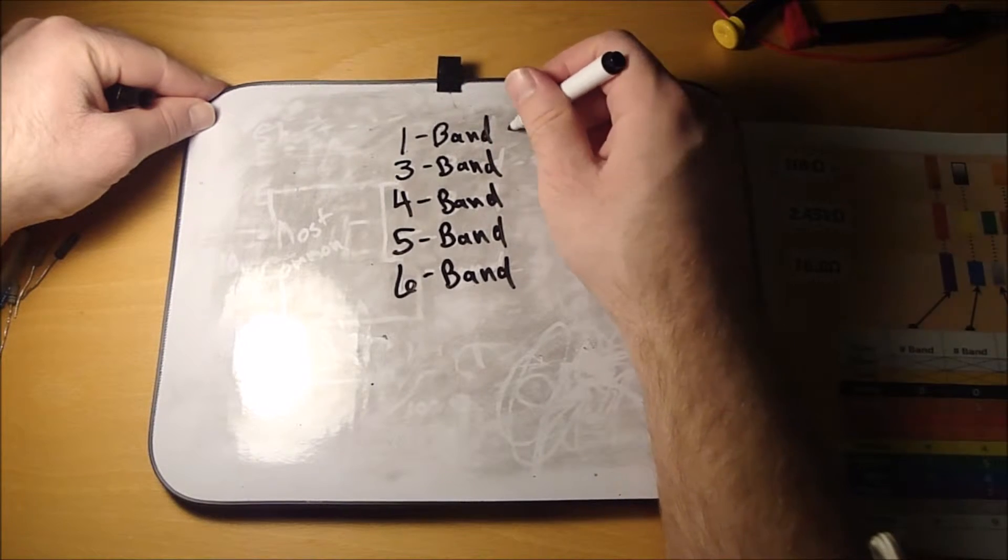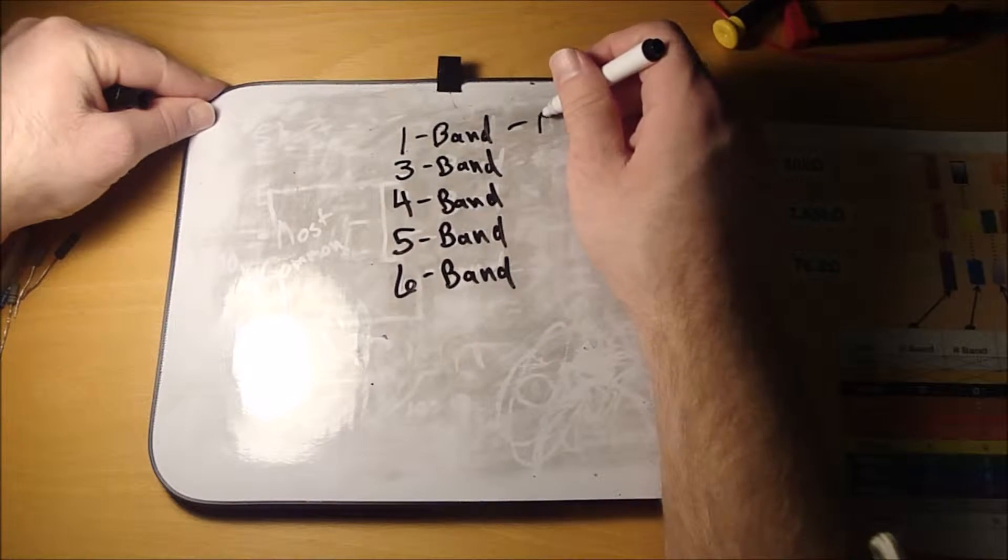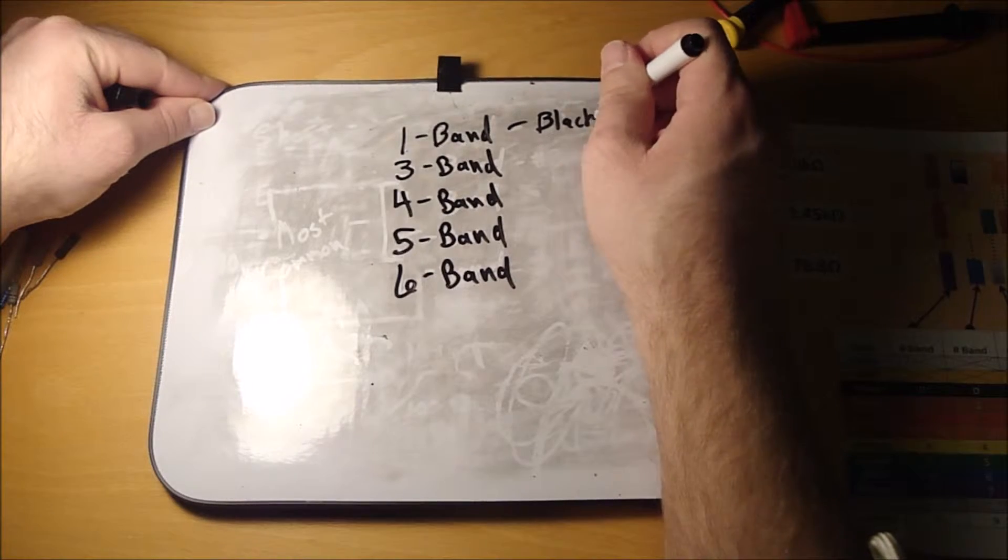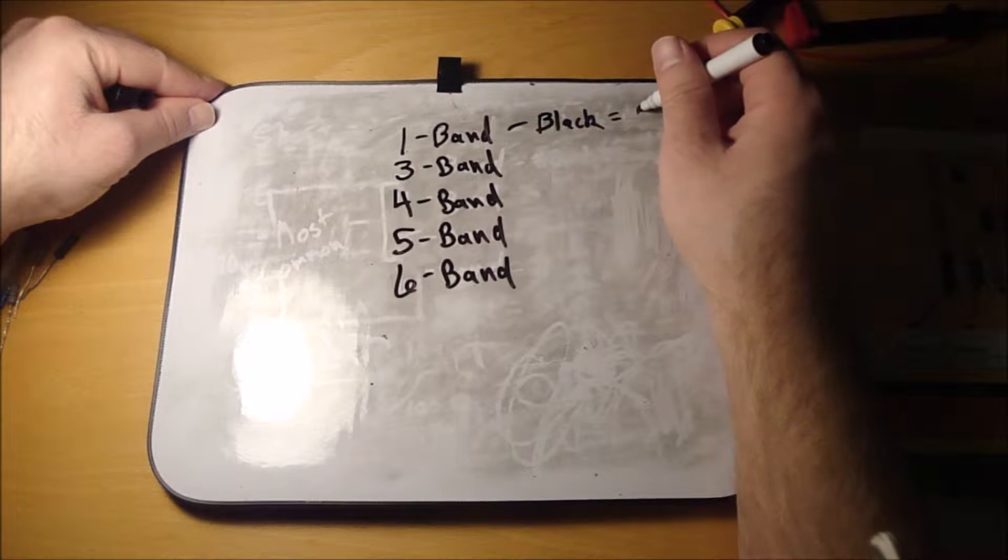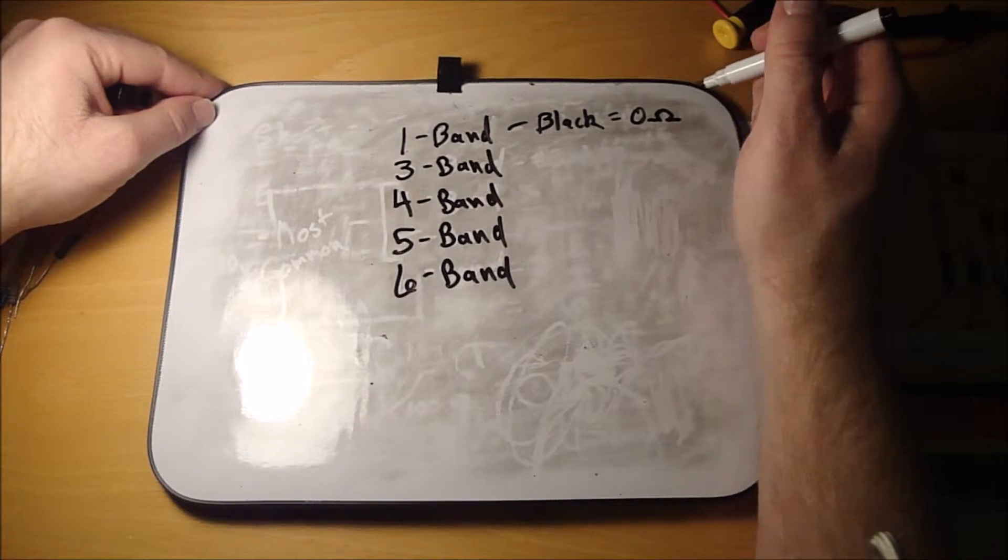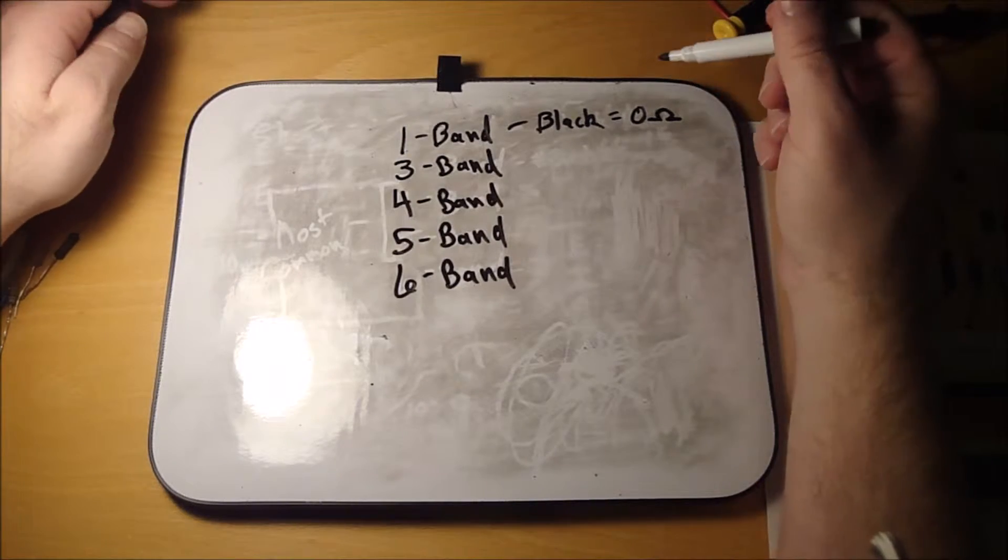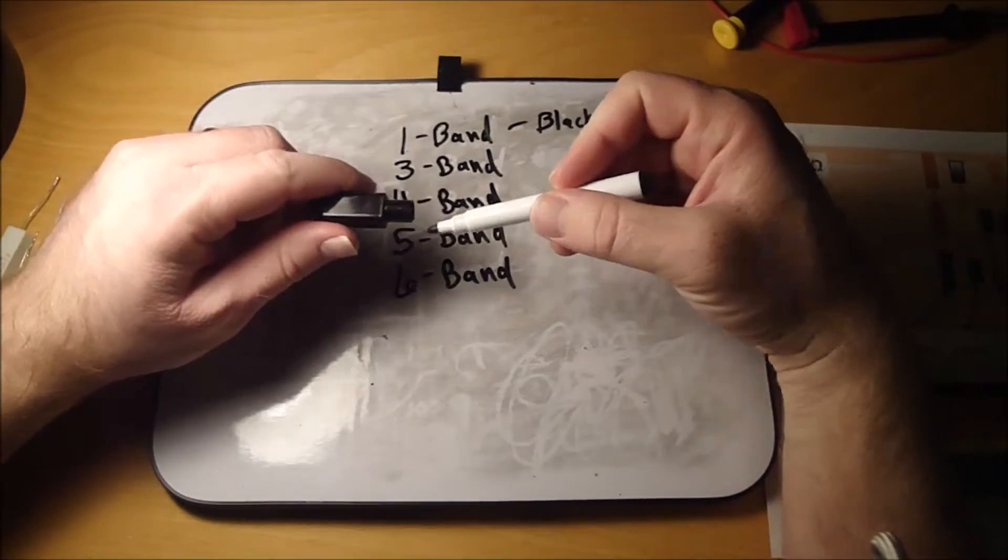As far as the one band goes, you're only going to find the one band will be black. That will mean that it's just a zero ohm resistor, just a jumper wire. So if you ever see that, it's just getting from one point to another on the circuit board.